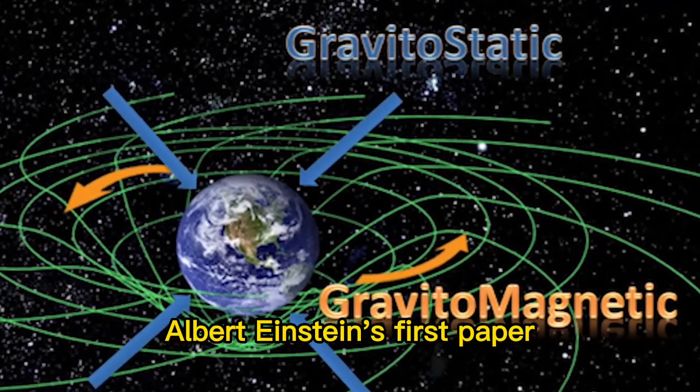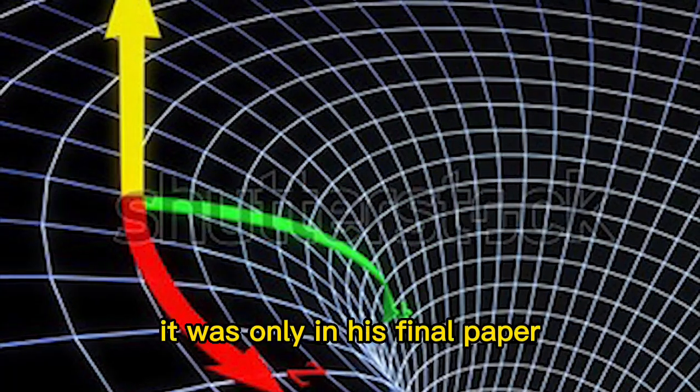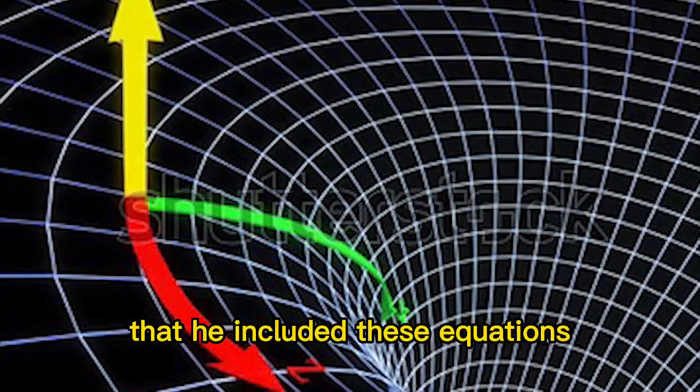Albert Einstein's first paper on the general theory of relativity did not include the correct equations for frame dragging. It was only in his final paper that he included these equations.